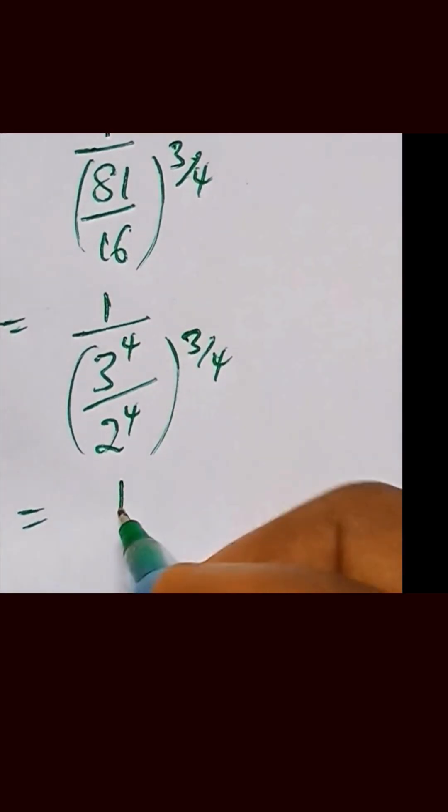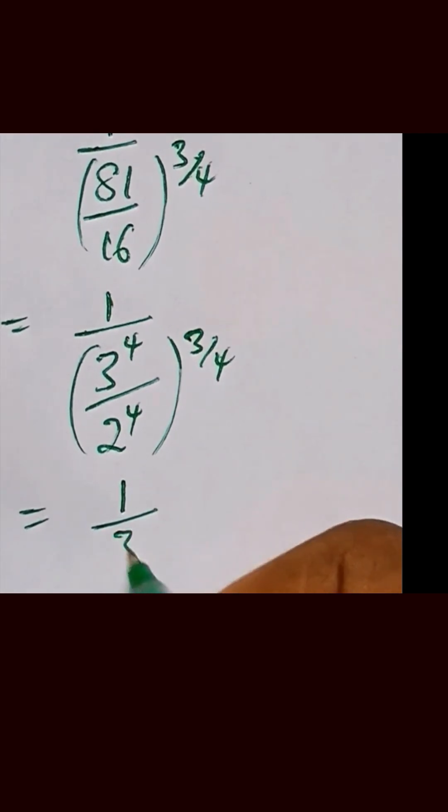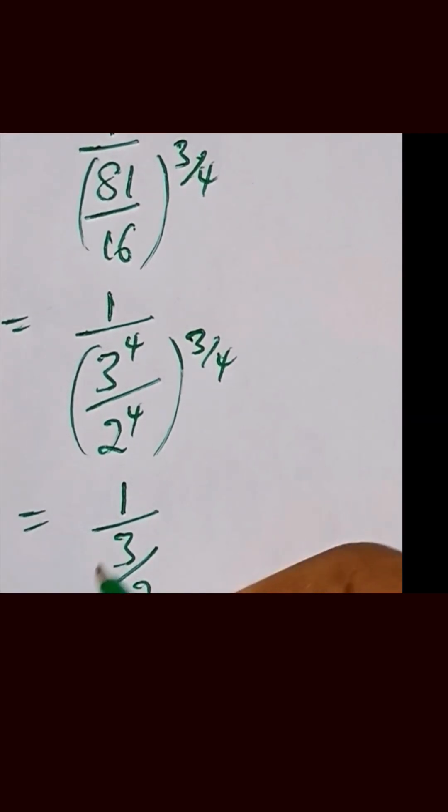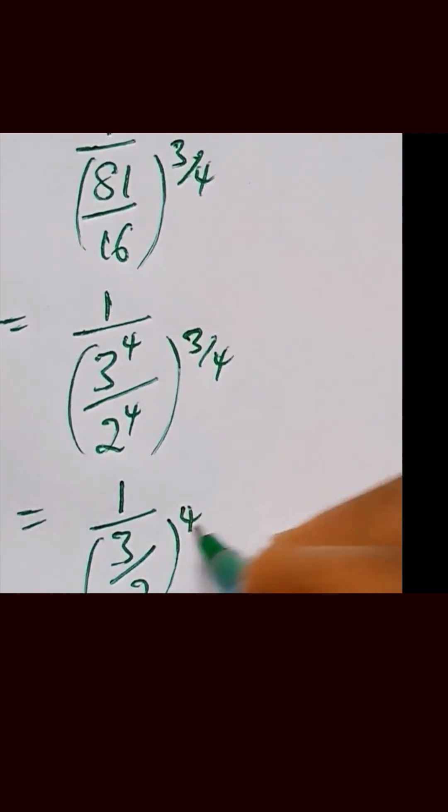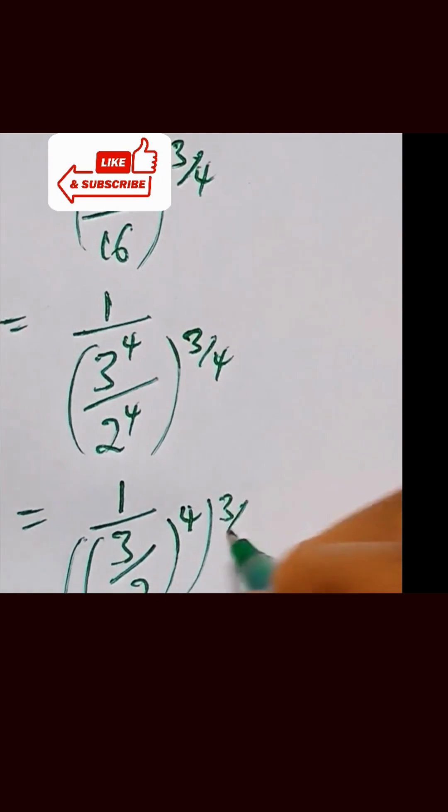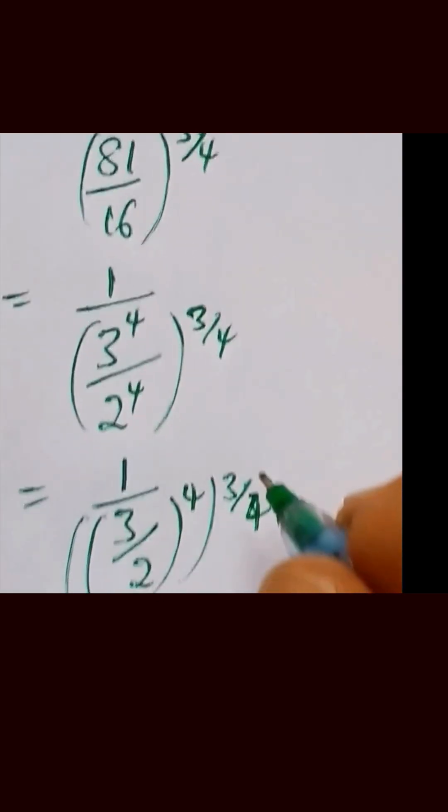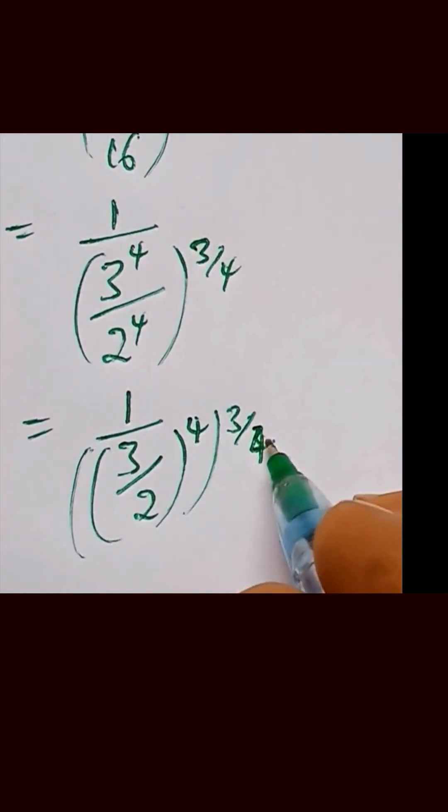And that can be written as 1 over 3 over 2. We bring this power out. So we have 4, then raised to the power of 3 over 4. From here, we multiply this.